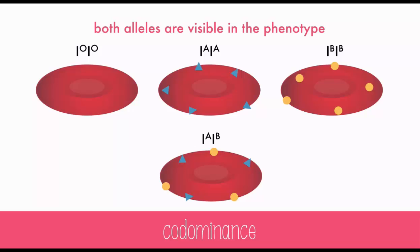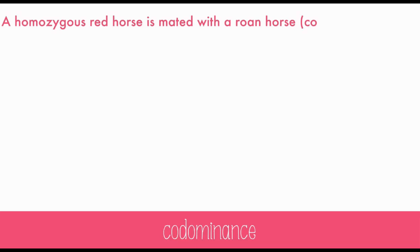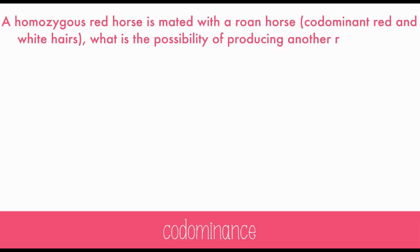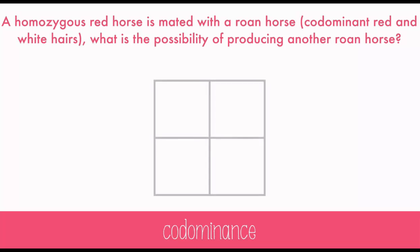Codominance can also happen in the fur of many animals. Two hair colors will show up, sometimes in patches. Let's try a case of animal fur: a homozygous red horse is mated with a roan horse — codominant red and white hairs. What is the possibility of producing another roan horse?